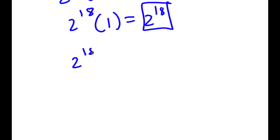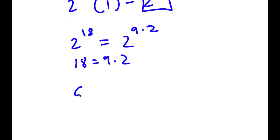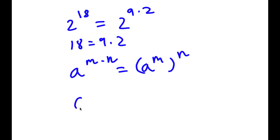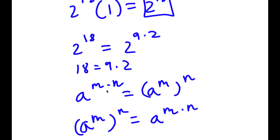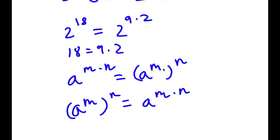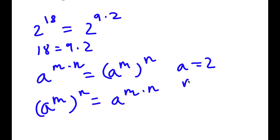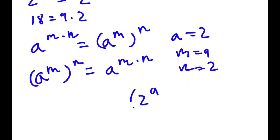Now 2 to the power of 18 is the same thing as 2 to the power of 9 times 2, because 18 equals 9 times 2. If I have something in the form a to the power of m times n, this equals a to the power of m to the power of n, and vice versa. So 2 to the power of 9 times 2 can be written as 2 to the power of 9, to the power of 2 — where a is 2, m is 9, and n is 2.